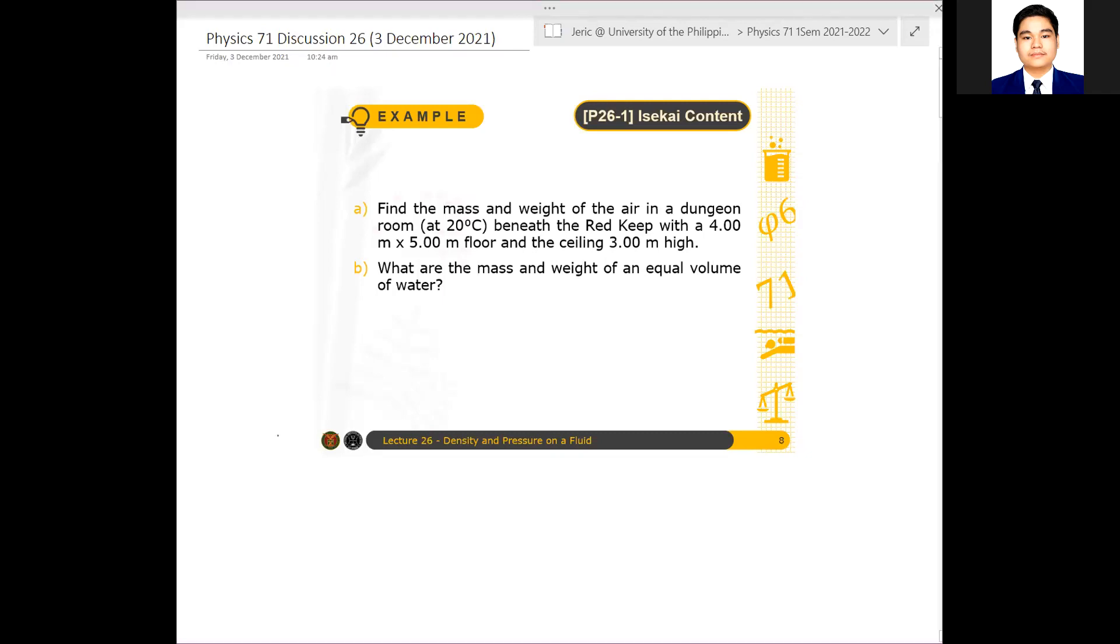So again, given, di pala given dito sa problem statement na to, but the density of air is 1.20 kilograms per cubic meter. Kung naalala mo kanina, nandun yun sa table na pinakita about the table of densities. And then, so therefore, what's the mass? So remember, density, assuming that the air inside the dungeon is uniform, syempre it's necessary to react. Pero let's assume that it is true. Then the mass density is just equal to the total mass divided by the total volume, implying that the total mass of air is just the density of air times the volume.